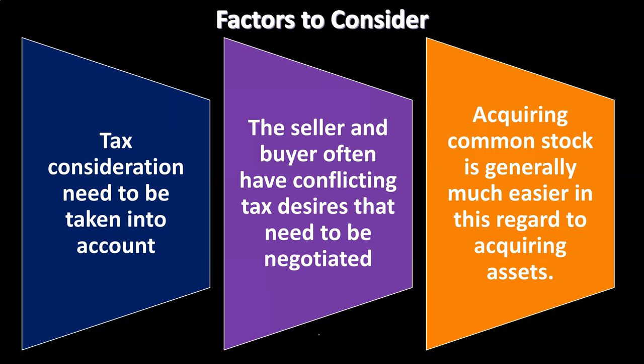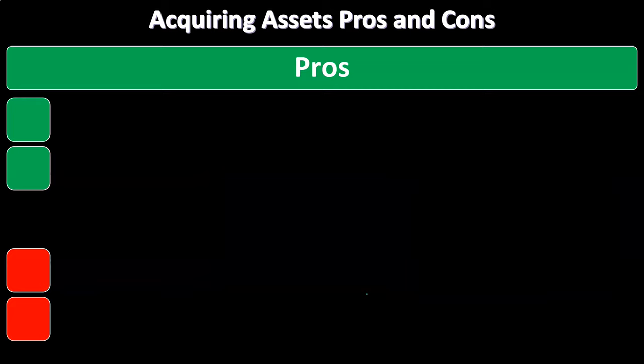Acquiring common stock is generally much easier than acquiring assets. With asset acquisition, you go through each individual asset negotiating value, which can be a long and conflicting process. The purchase of common stock is generally going to be easier, but of course there are pros and cons to either method.